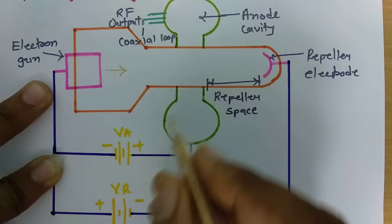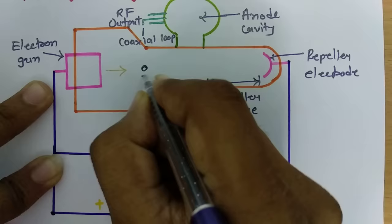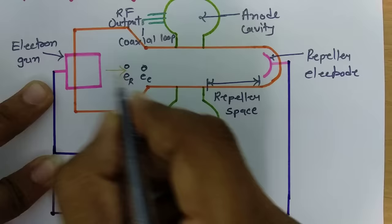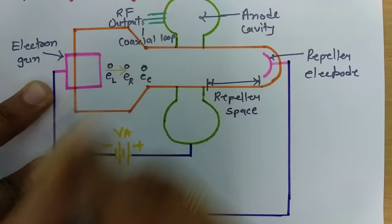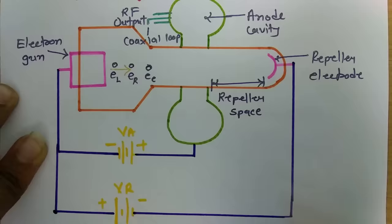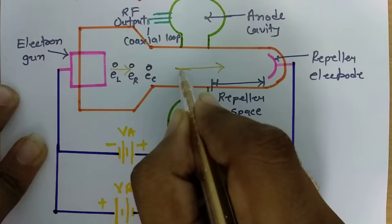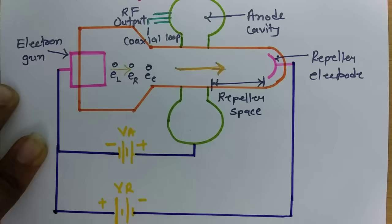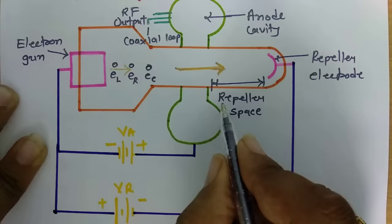Let us consider a few electrons. There is an early electron, then a reference electron which is slightly delayed with respect to the early electron, and a late electron. These three electrons are now moving in this direction. Some electrons cross this anode cavity — not all electrons are collected there. The space from the anode cavity to the repeller electrode is called the repeller space.